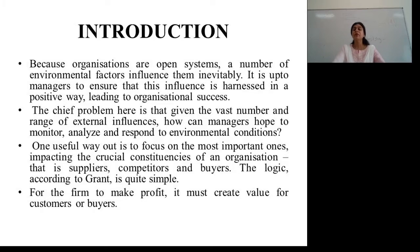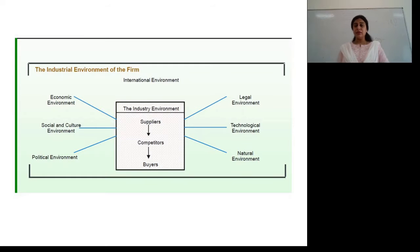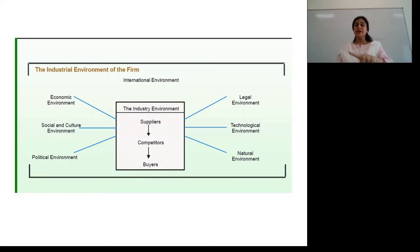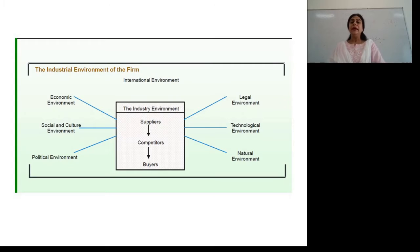It should also give very fair prices and very good products to the customers or the buyers. This chart depicts the industrial environment — suppliers, competitors, and buyers affect the company. They take in the international environment, that is at the global front. There are also certain environmental factors like legal, technological, natural, economic, social and cultural, and political environments that continuously affect the company. We have already dealt with these different kinds of external environments in the previous lectures.